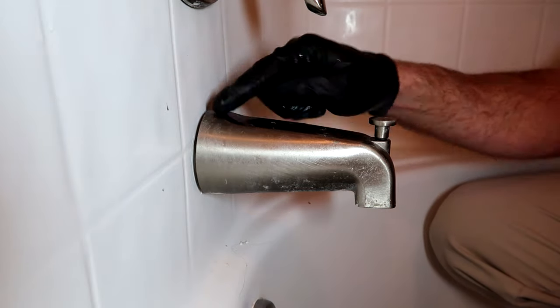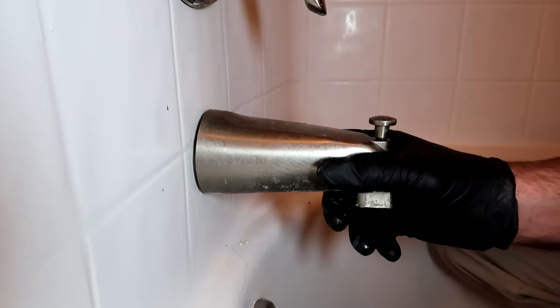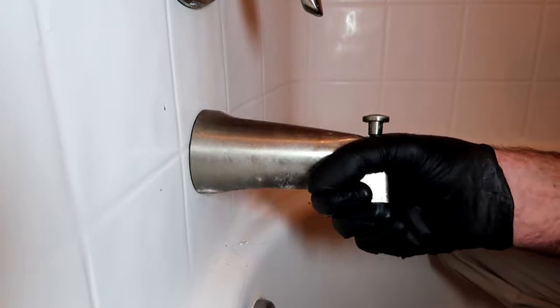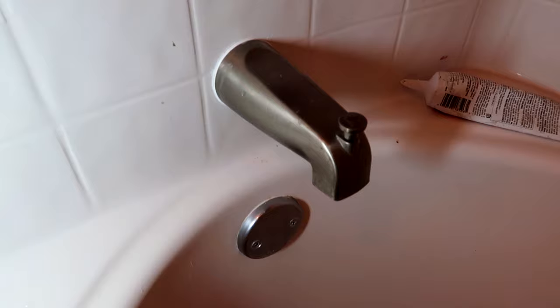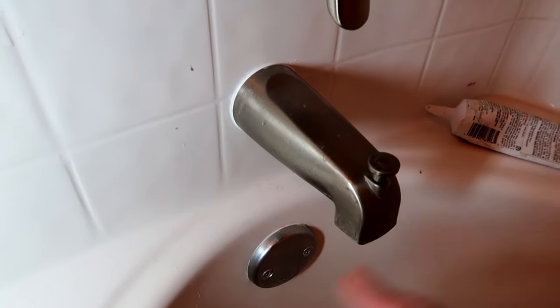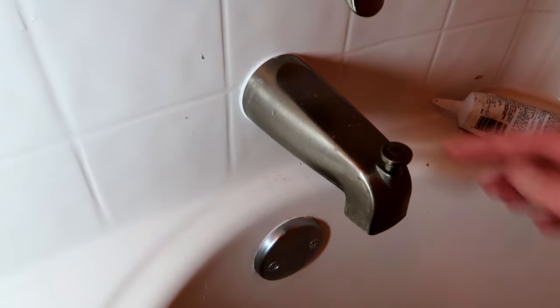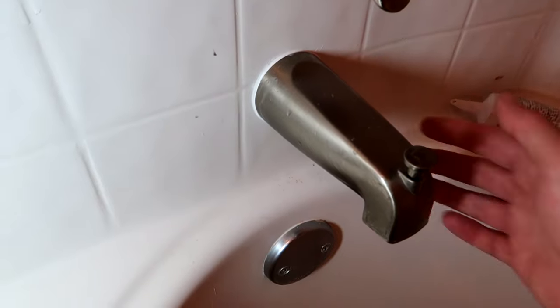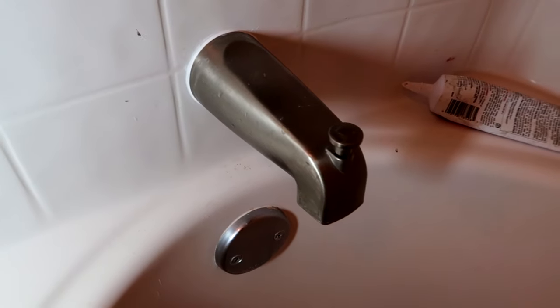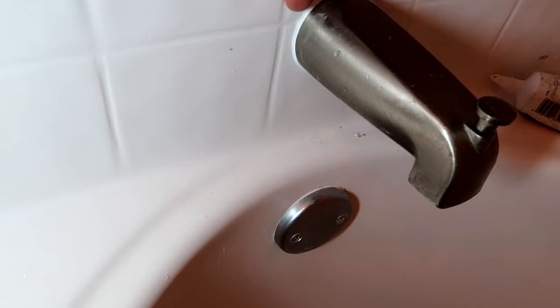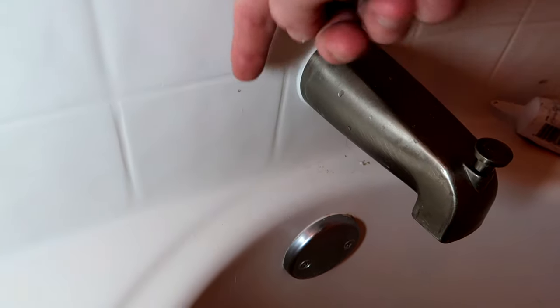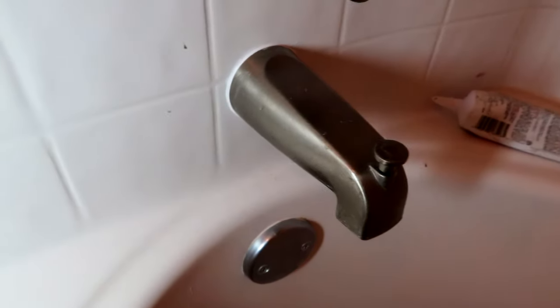I'm also gonna bust a bead of caulk on the base back here. That'll give it a little more hold. It's all done, got a bead of caulk around it. I'm on the third floor, so I definitely like to put a bead of caulk around any spouts when I'm on the third floor. Keeps shower water from running down behind it and going behind the wall and dripping downstairs.